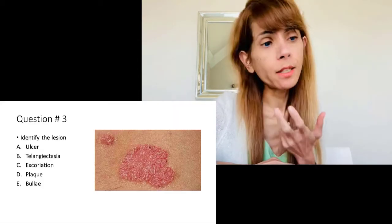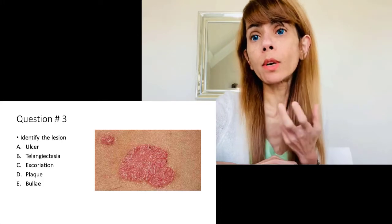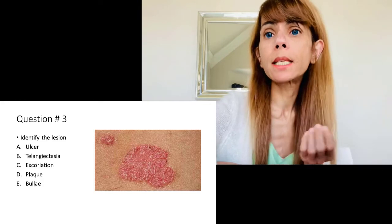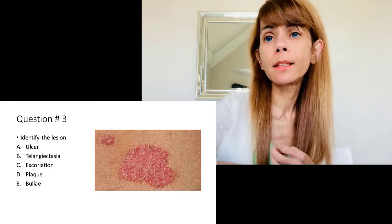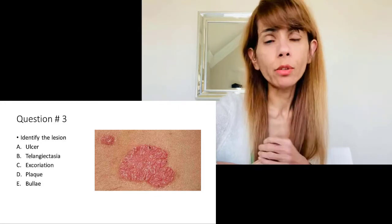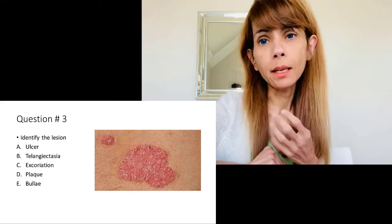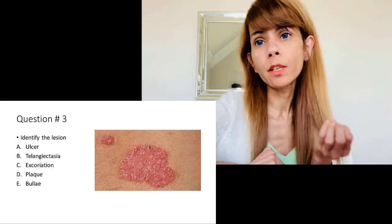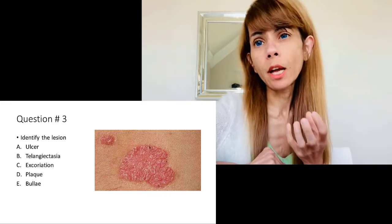Question number three is about this lesion on the skin on an extensor surface. To identify it, you need to look at its characteristics: it is broad-based, hyperkeratotic, thick, scaly, slightly erythematous, and quite itchy. The correct answer is plaque. It's not an ulcer — there is no breakage. There is no telangiectasia, no excoriation, and it is not a bulla because it's not fluid-filled.